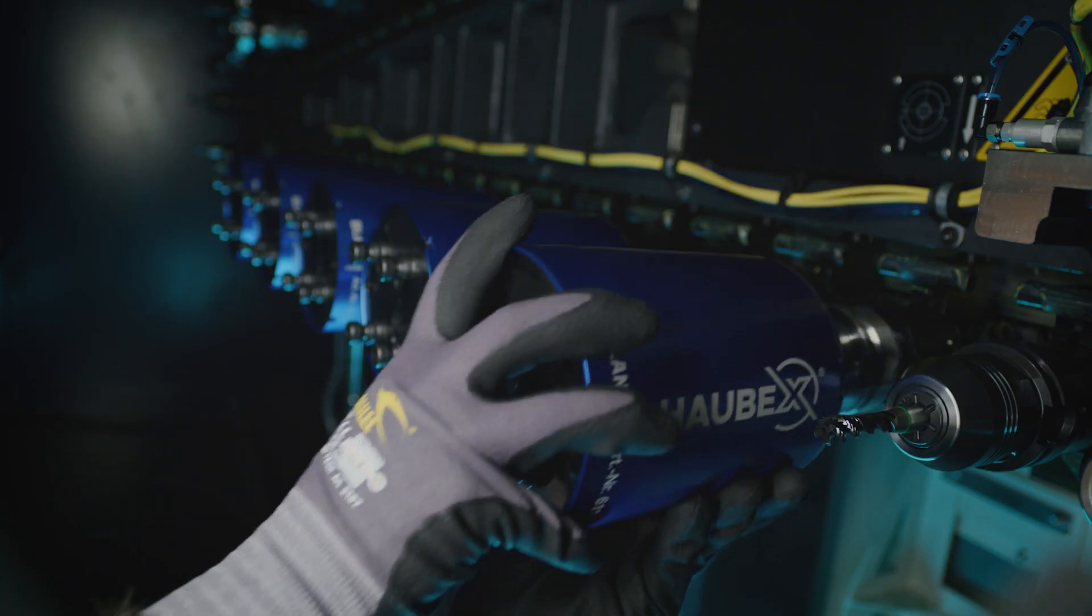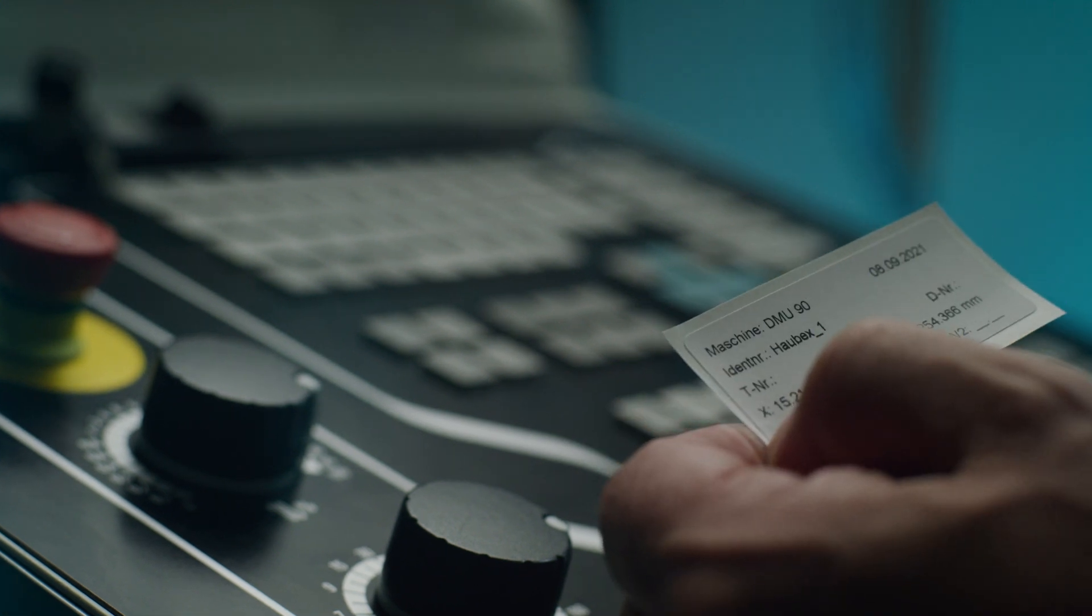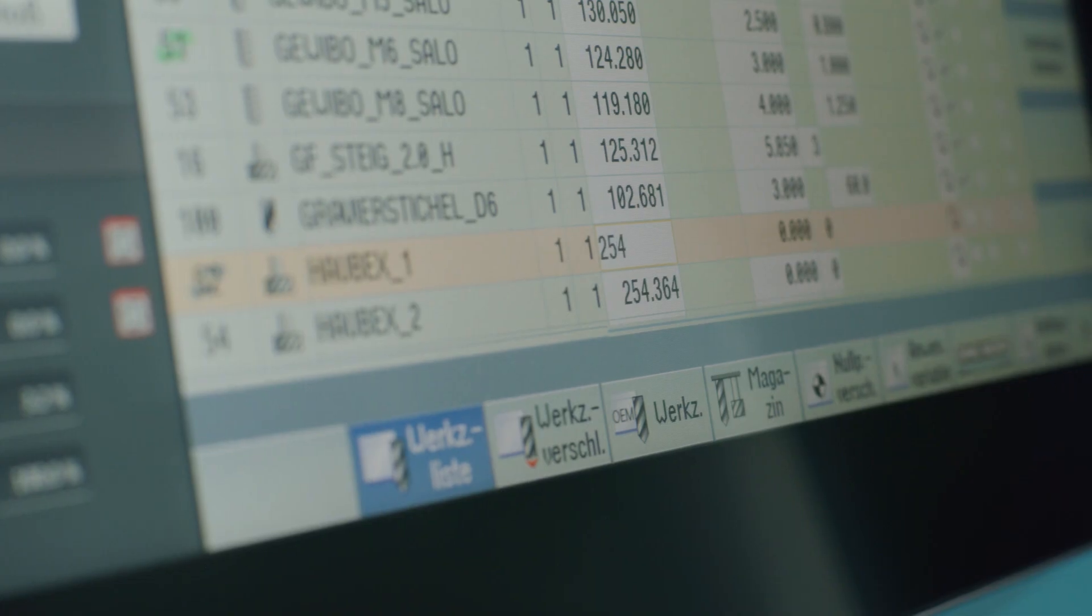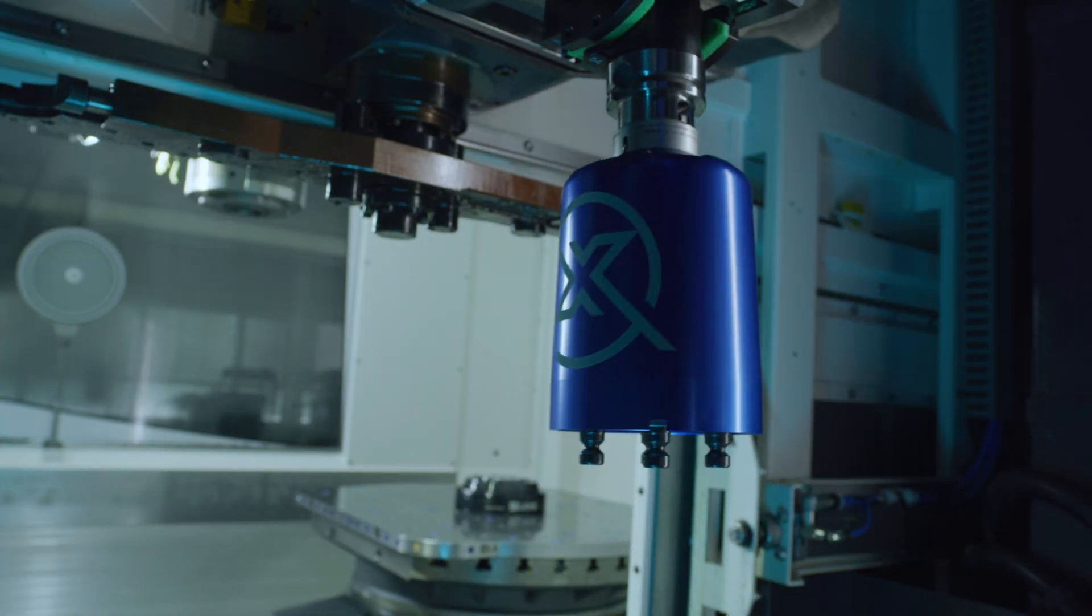The special feature is a work holding hood as a carrier system for vice and workpiece blank, which is stored in the magazine like an ordinary tool and is automatically changed into the machine.